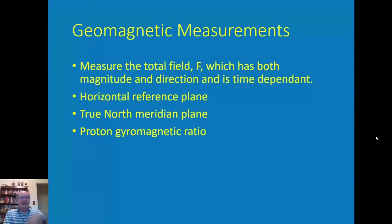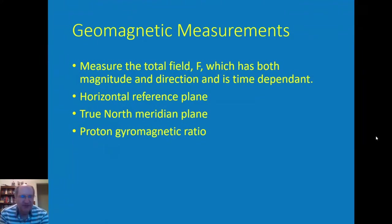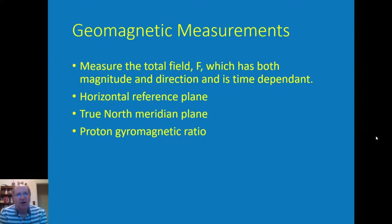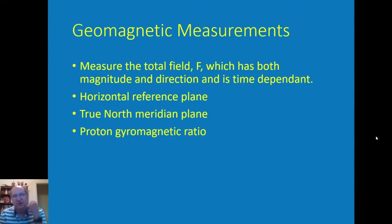To deal with all this, at the USGS and other agencies around the world we do magnetic measurements. We measure the total field F, which has both a magnitude and direction and is time-dependent — it's a vector. Everything is referenced to the horizontal reference plane, the true north meridian plane. We have nuclear magnetometers that are referenced to the proton gyromagnetic ratio.